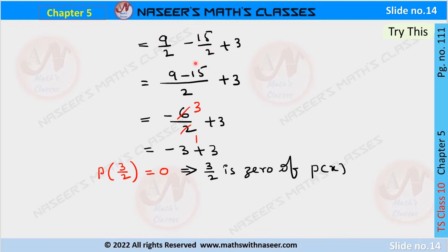Here, the denominators of the first two terms are 2, so we combine them. It can be written as (9 minus 15) by 2 plus 3. And 9 minus 15 equals minus 6, so the denominator is 2. We can write this as minus 6/2 plus 3, which simplifies to minus 3 plus 3.